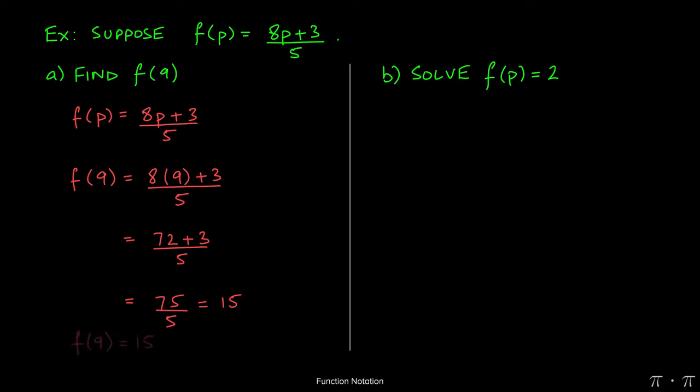Now what this means is when the input of the function is 9, the output of the function is 15. Or another phrase that we could use to explain this is that when the independent variable assumes the value of 9, the dependent variable is 15. So there are a couple of different ways of expressing that same result.